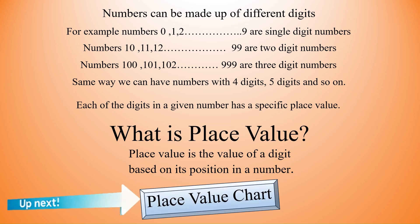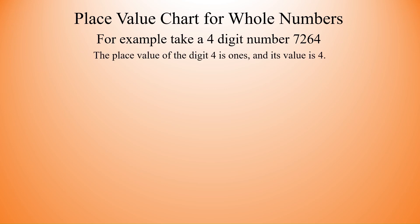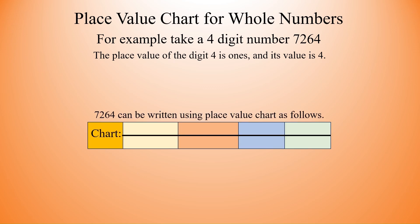Next let us see place value chart. Place value chart for whole numbers. A place value chart helps us organize numbers based on their position. For example, take a 4-digit number 7264. The place value of the digit 4 is ones and its value is 4. So we will try to mark it on a chart. Write ones, below that write the number 4, and this is how we represent it by small tiny squares.